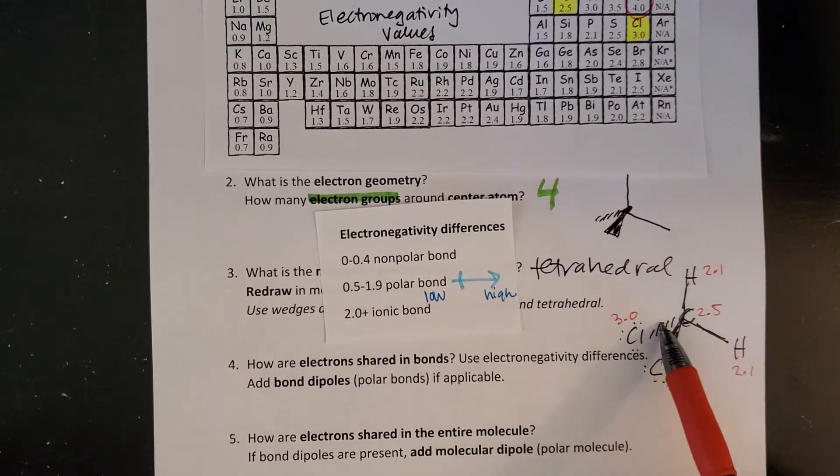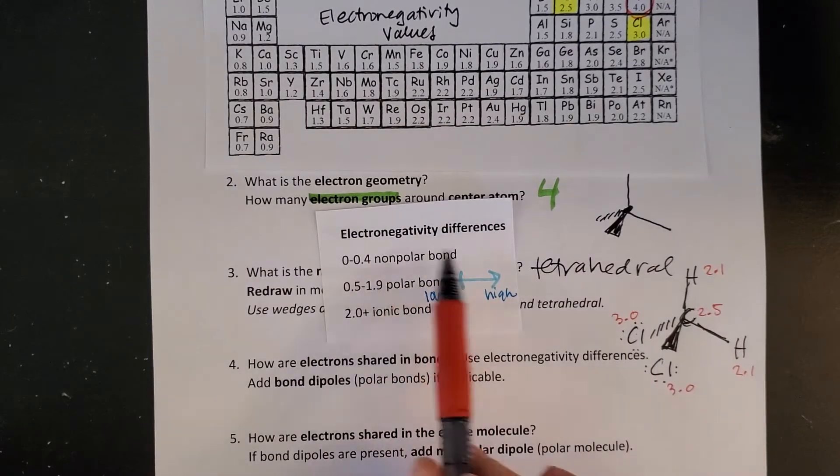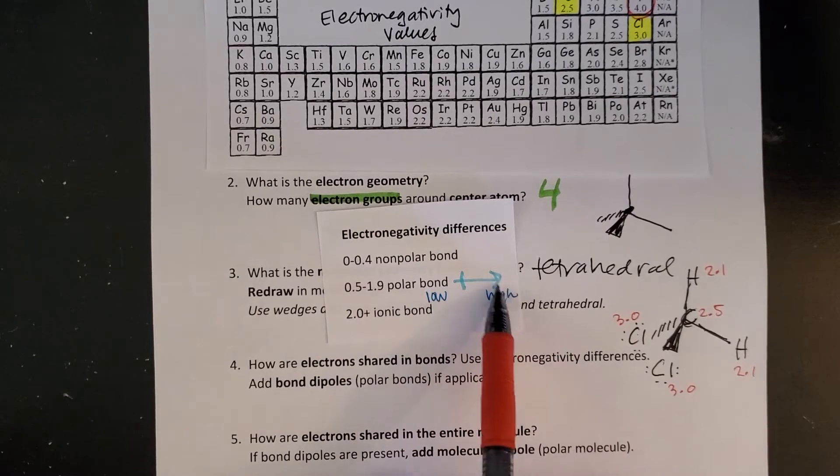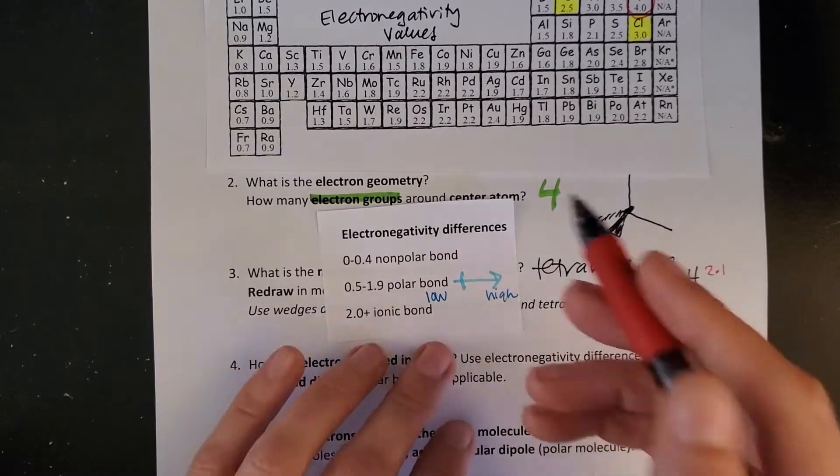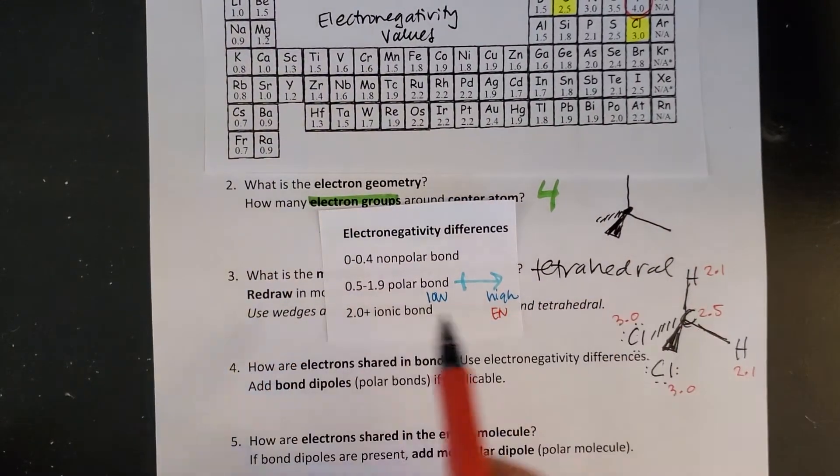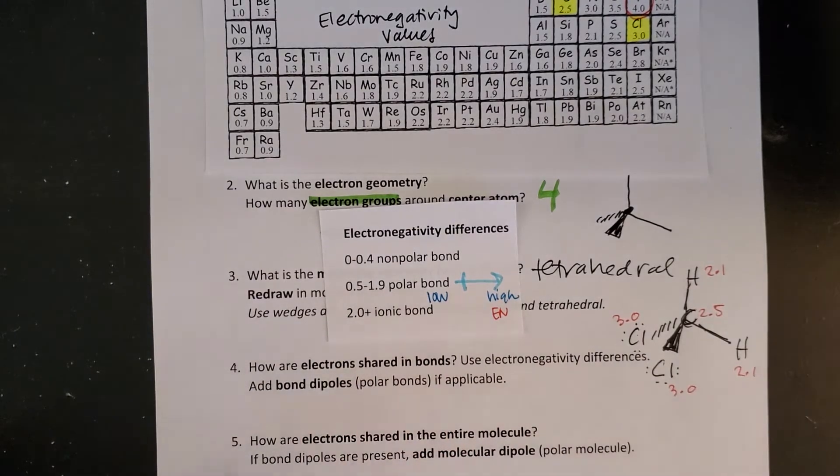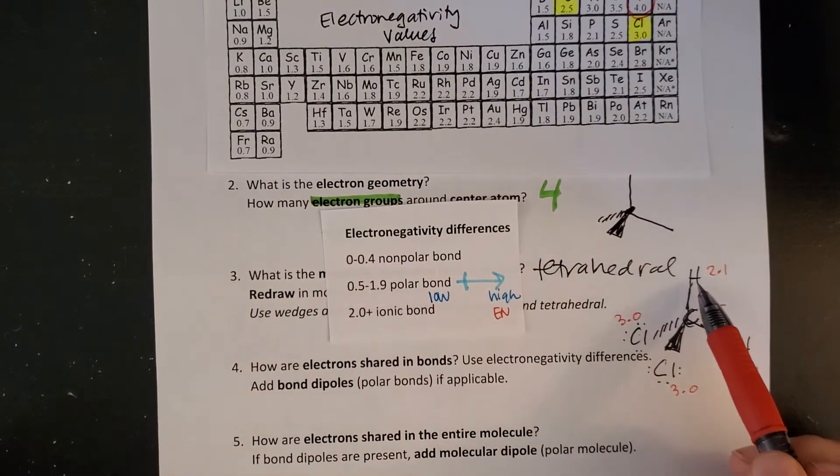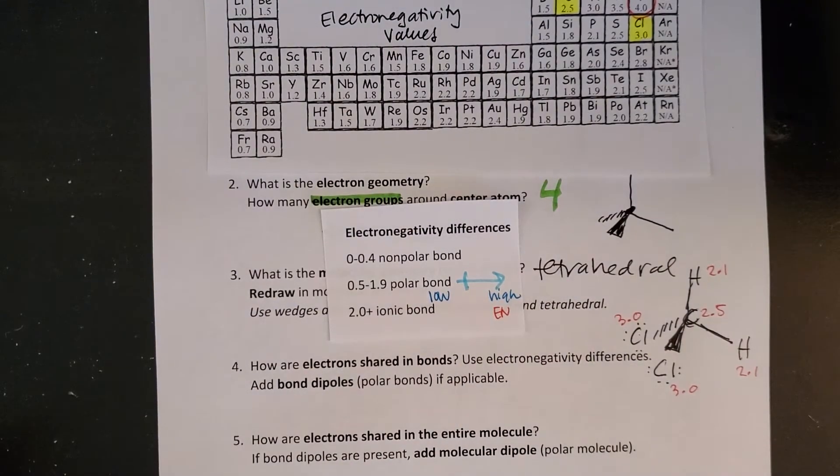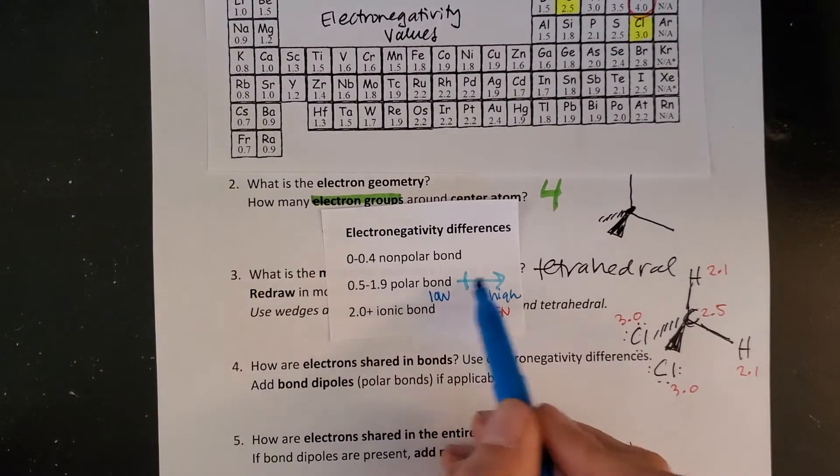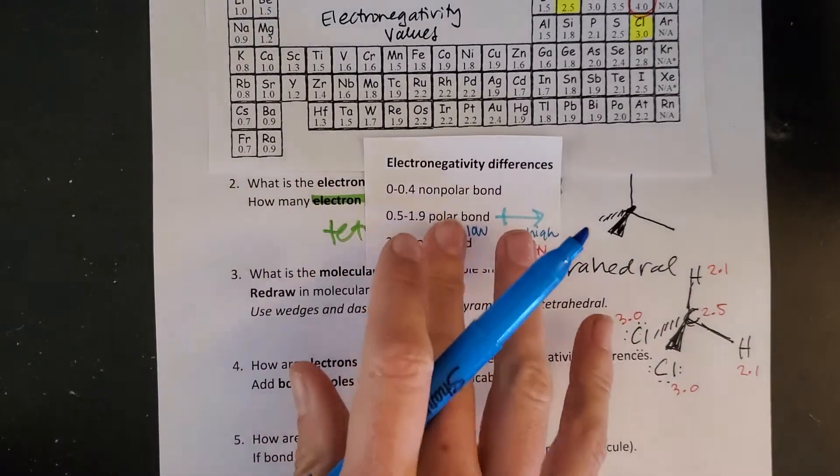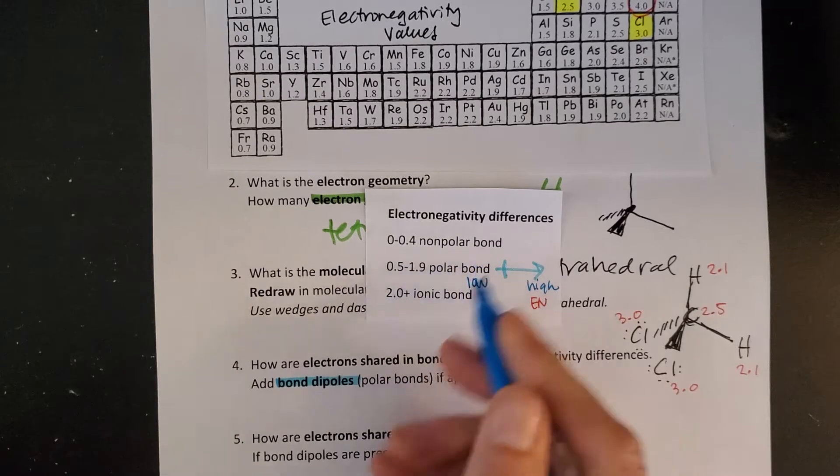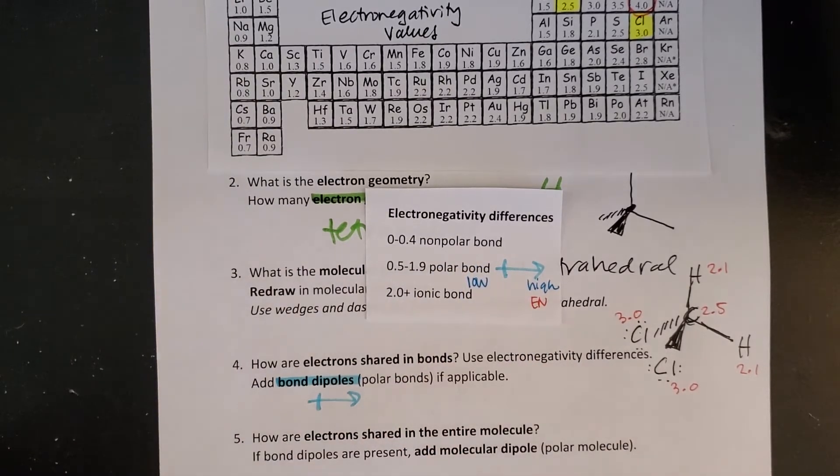I need to evaluate each bond and compare to these differences. If it's between 0.5 and 1.9, electrons are pulled towards the higher electronegativity. If it's above 2.0 it's an ionic bond where one element has taken the electrons. If there is a bond dipole we'll put a blue arrow. So if there's a difference in the middle range we draw that bond dipole.